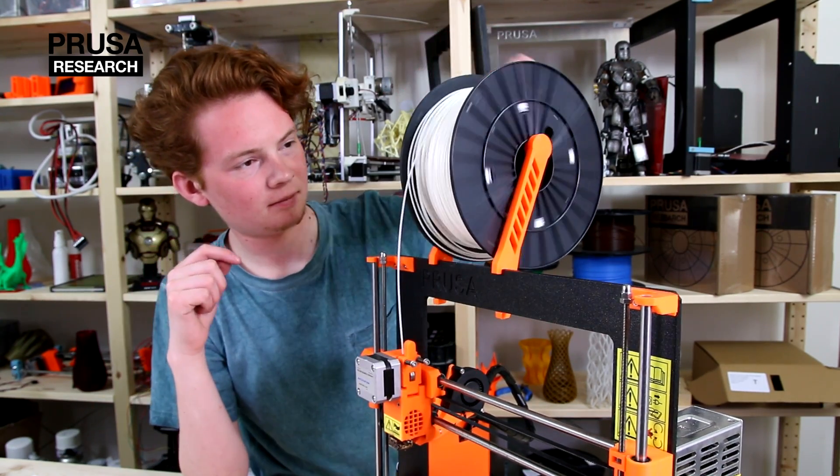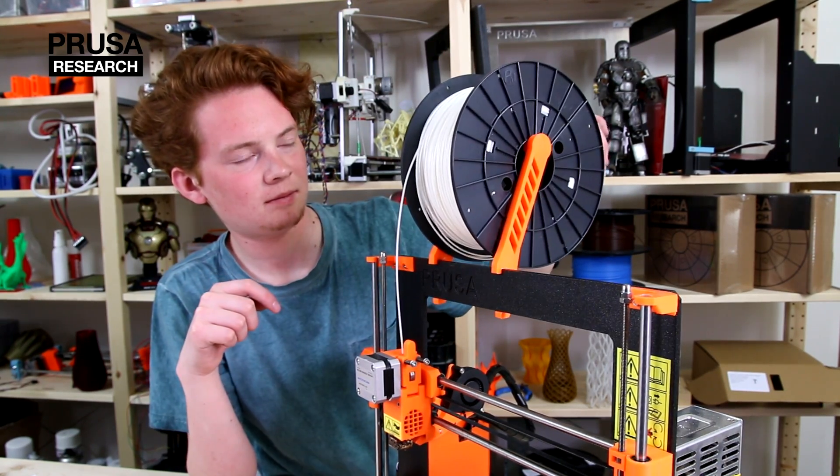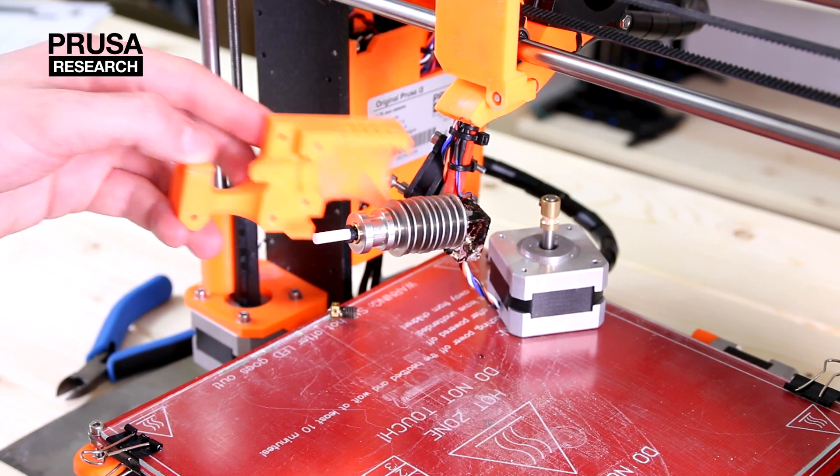If the printer after all these steps still doesn't extrude the filament evenly, we will start with Teflon tube exchange. You need to disassemble the whole print head.